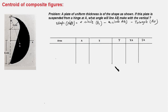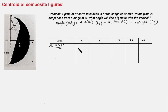Here is the table in which we will keep adding our data. Our first area is A1, the semicircle, and that area is πr²/2. The radius is 6 cm, so π(6²)/2, and the numerical value works out to 56.55 — and that will be positive.